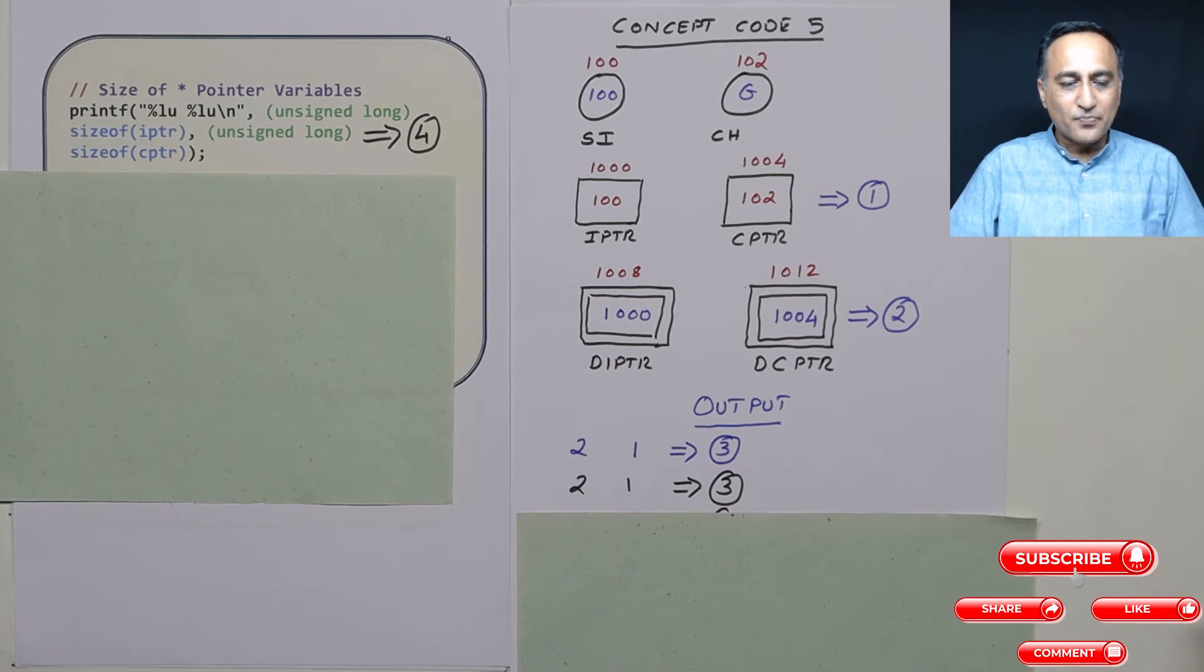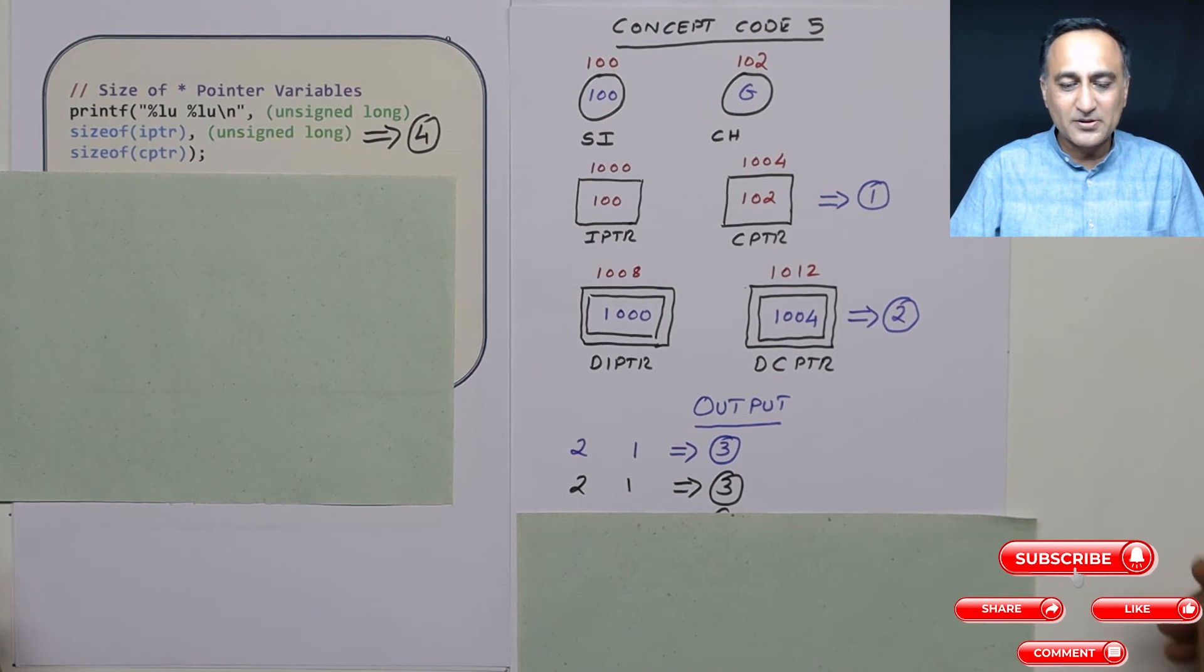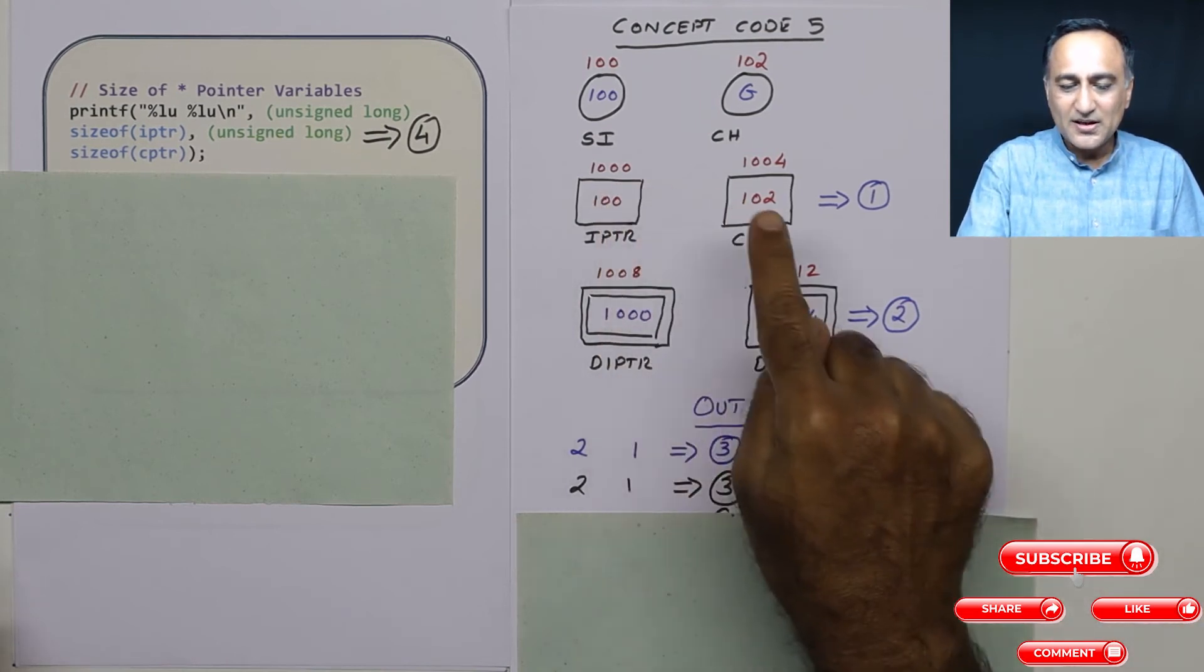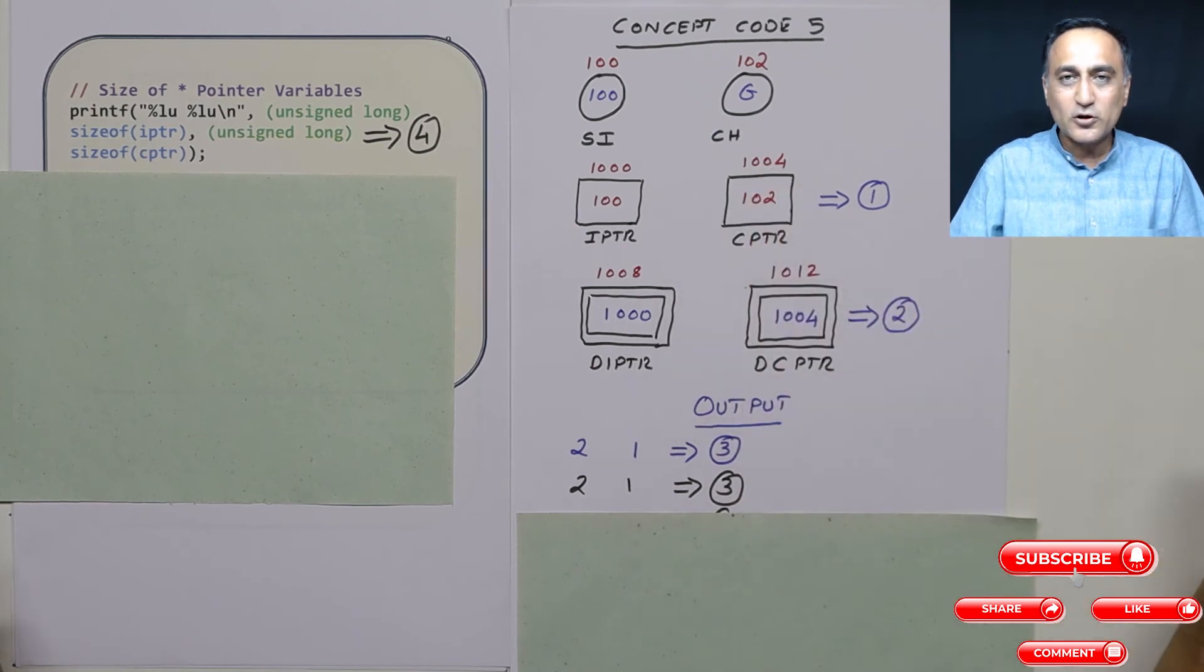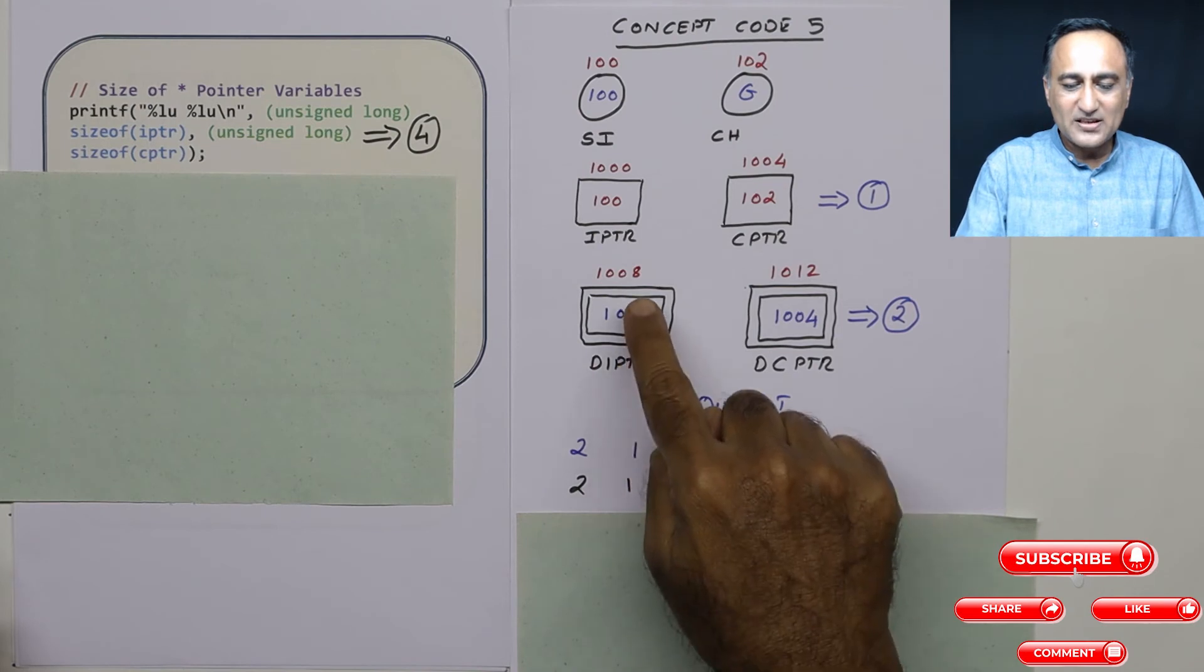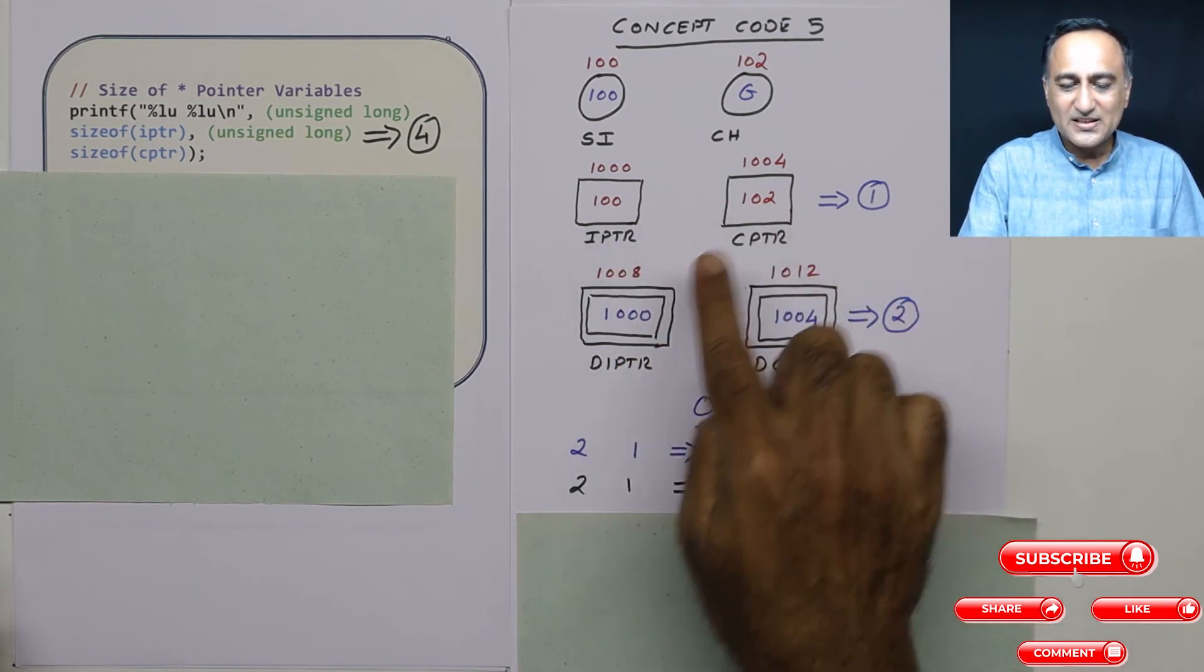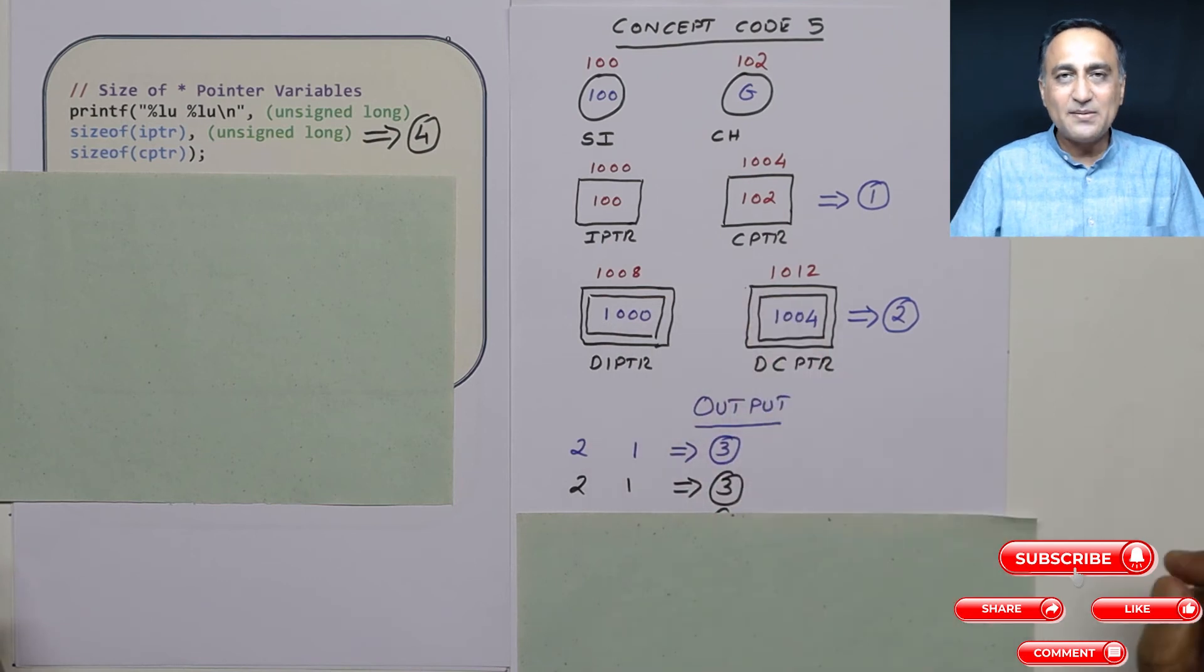Now let me tell you how we find the size of pointer type of variables. In my example, iptr is at 1000th location, cptr is at 1004th location, that means there is a difference of 4 bytes. diptr is at 1008, dcptr is at 1012. That means these particular numbers tell me that the size of each of my pointer type of variable happens to be 4 bytes, although generally on most of the machines you are going to work, it's going to be 8 bytes.